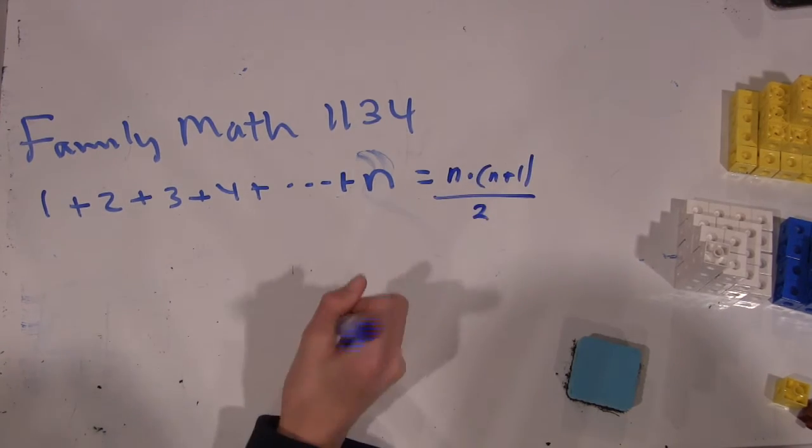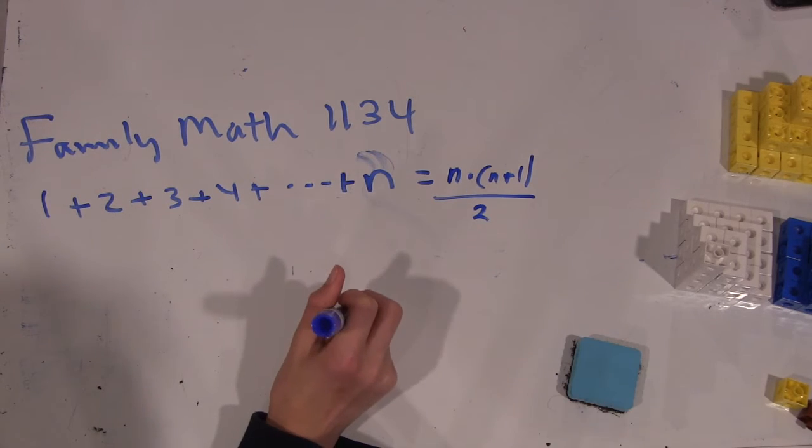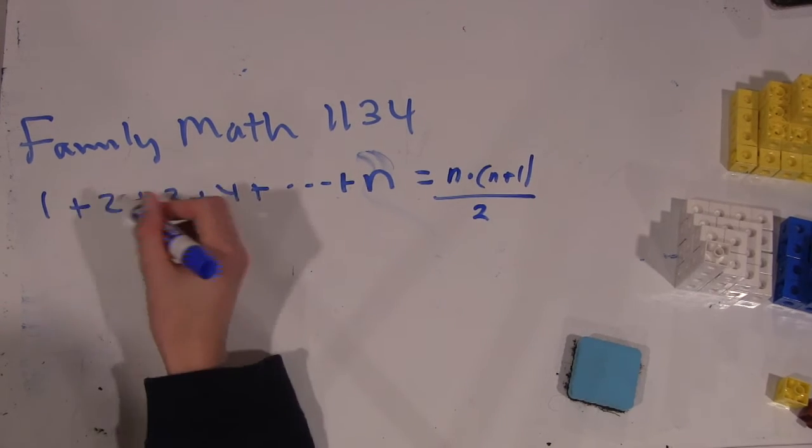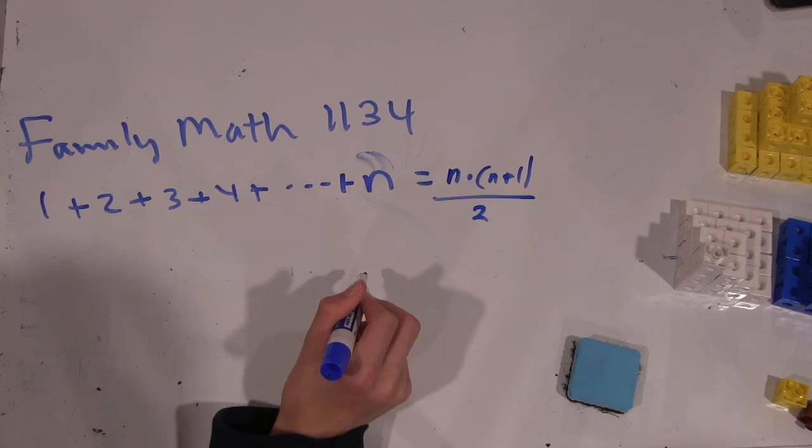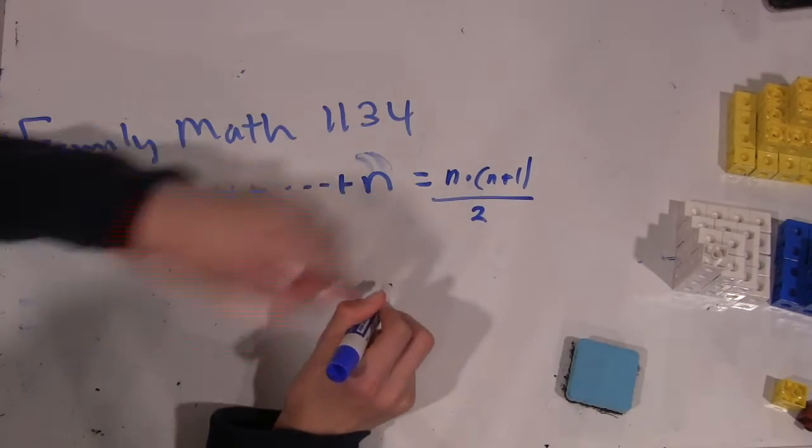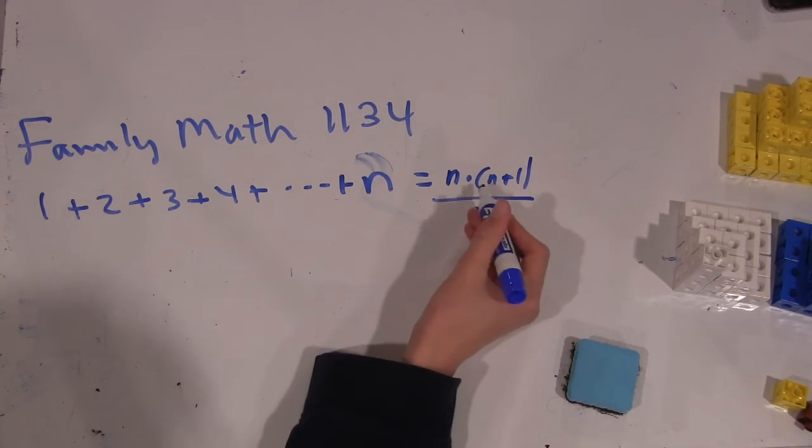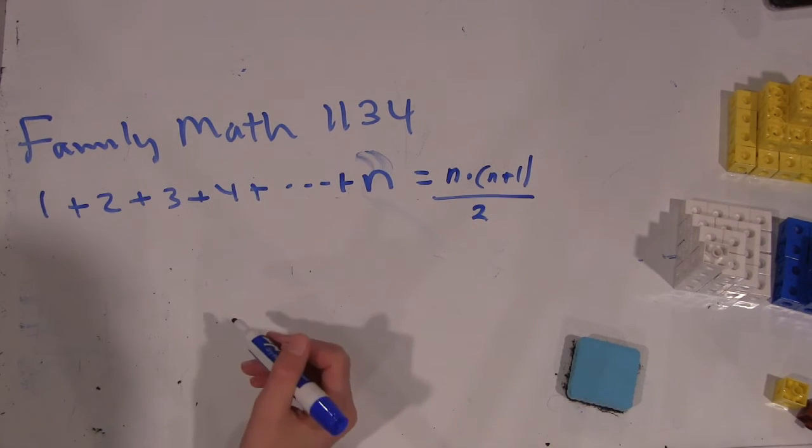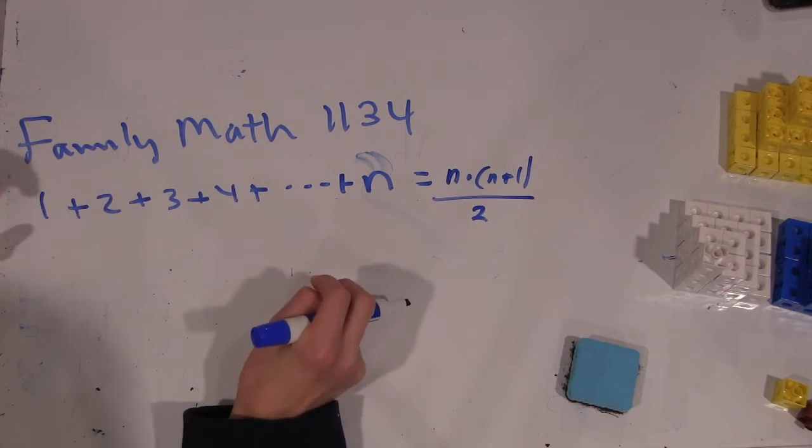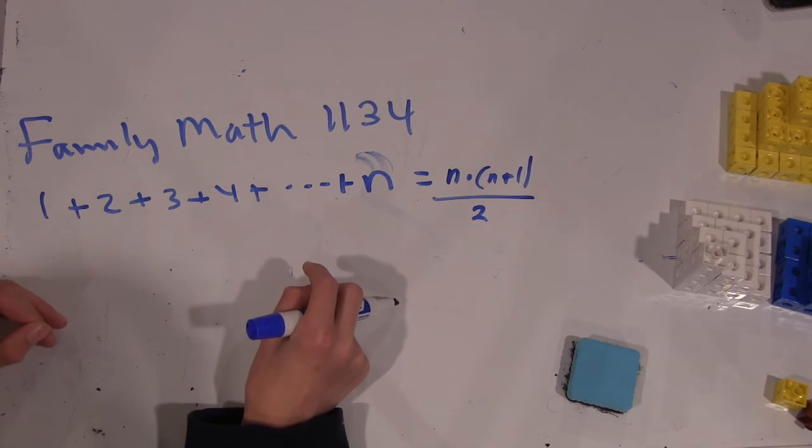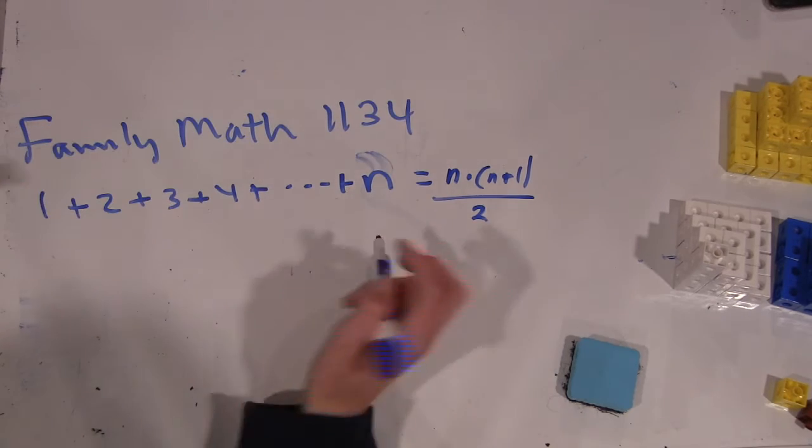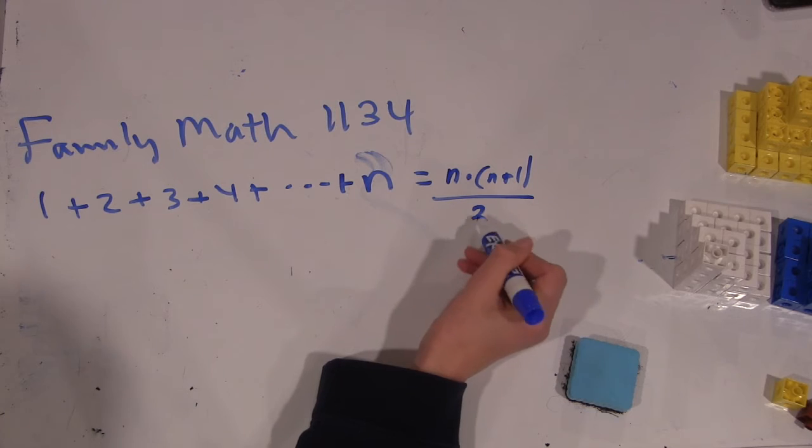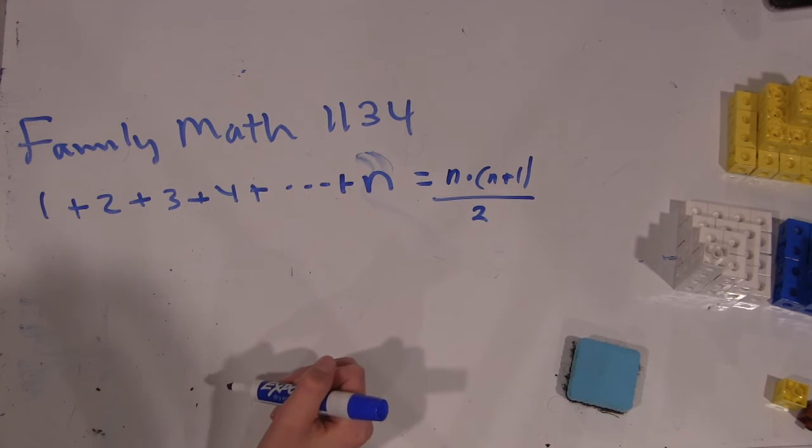Okay. And how can we check if that's an appropriate formula? Let's start here. We look at just 1. 1 equals 1 times 2 divided by 2, so 1. Let's check it for maybe just one other value: 2. 1 plus 2 should be 3. So we have 2 times 3 divided by 2, which is 3. Okay.